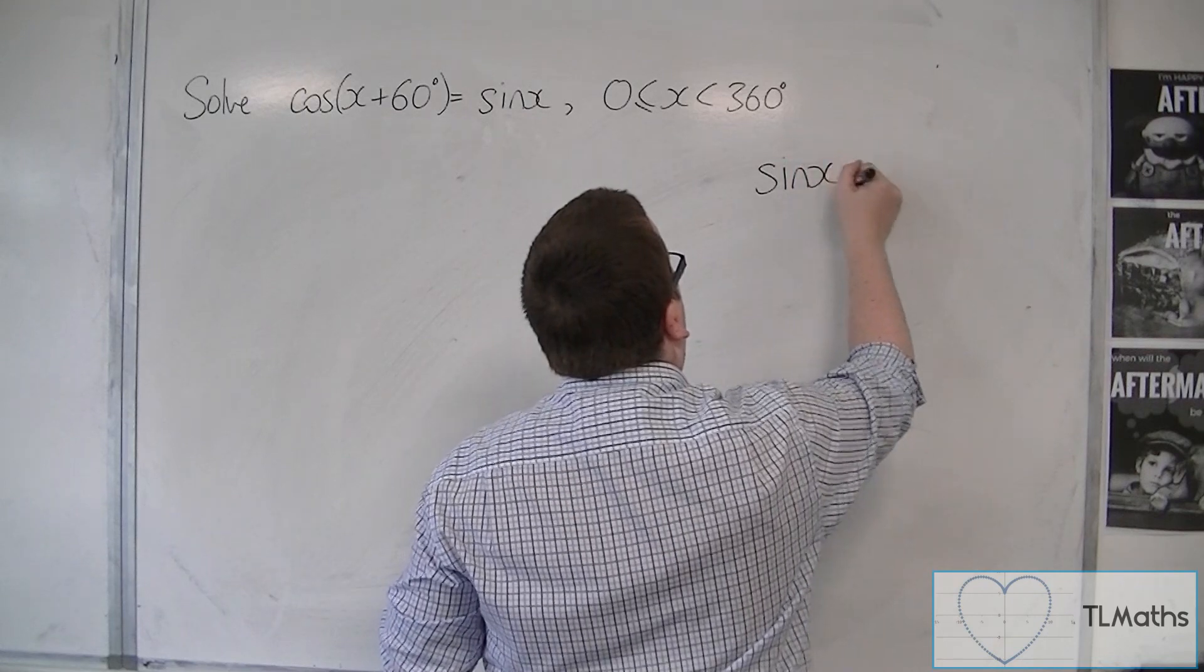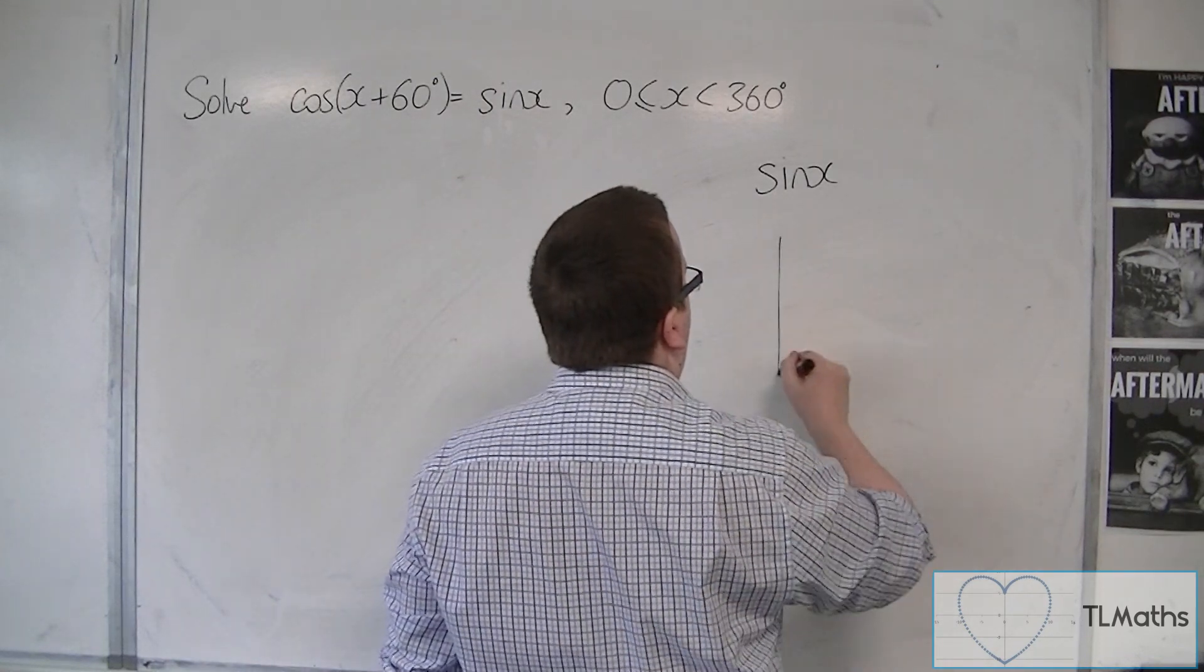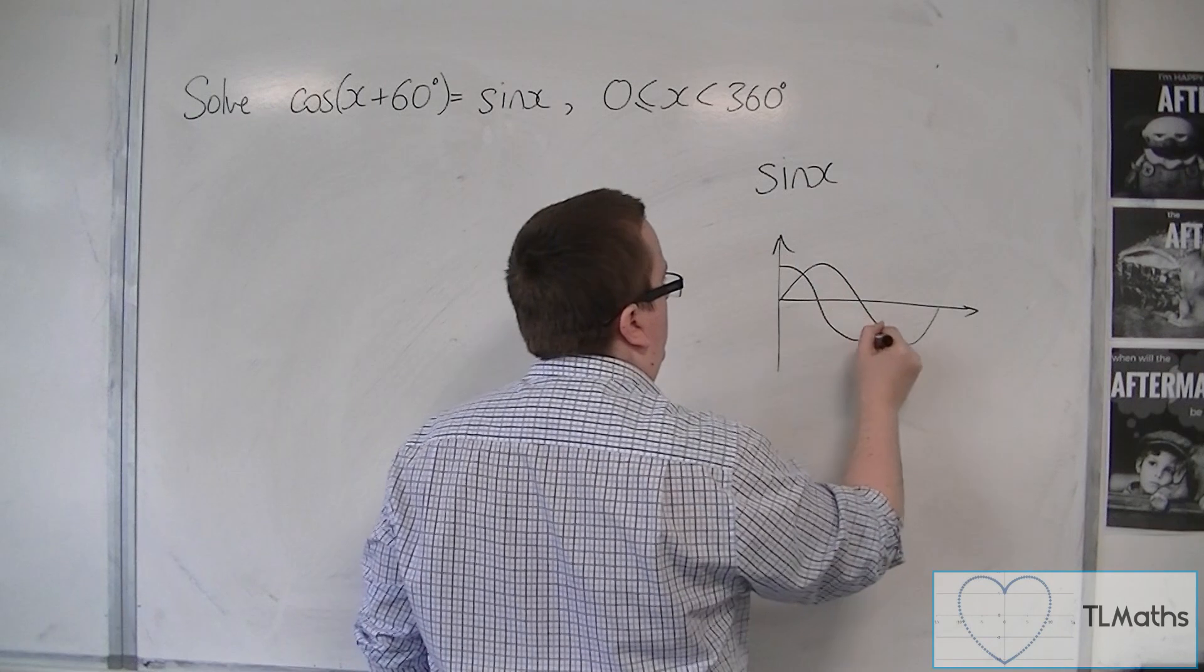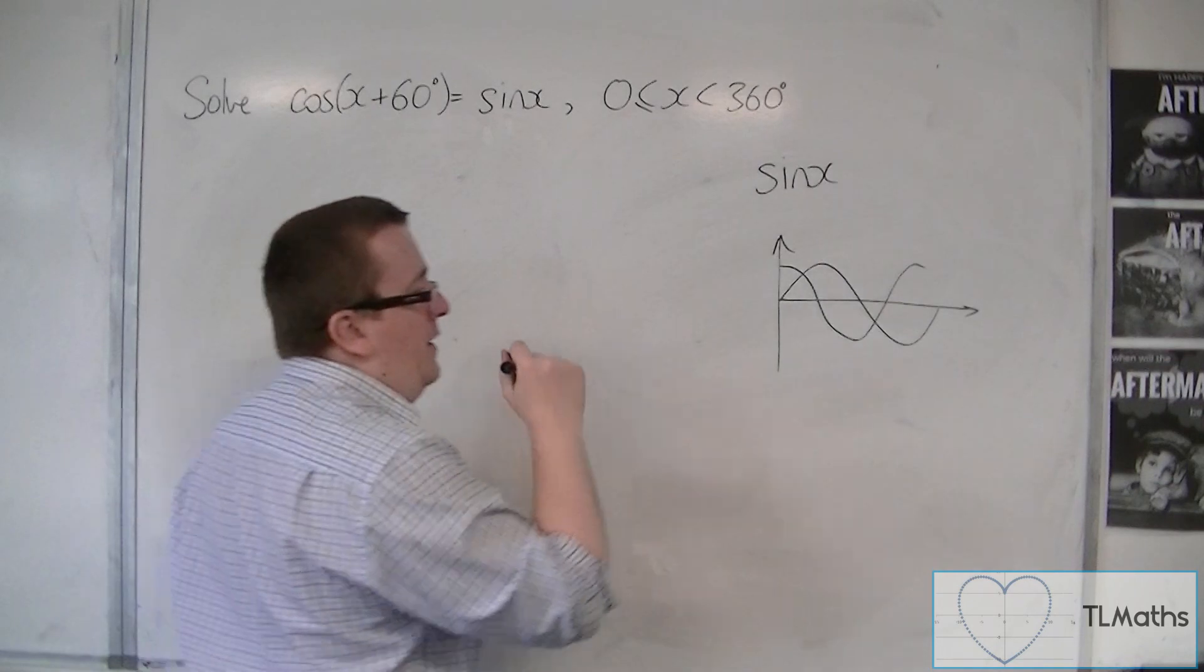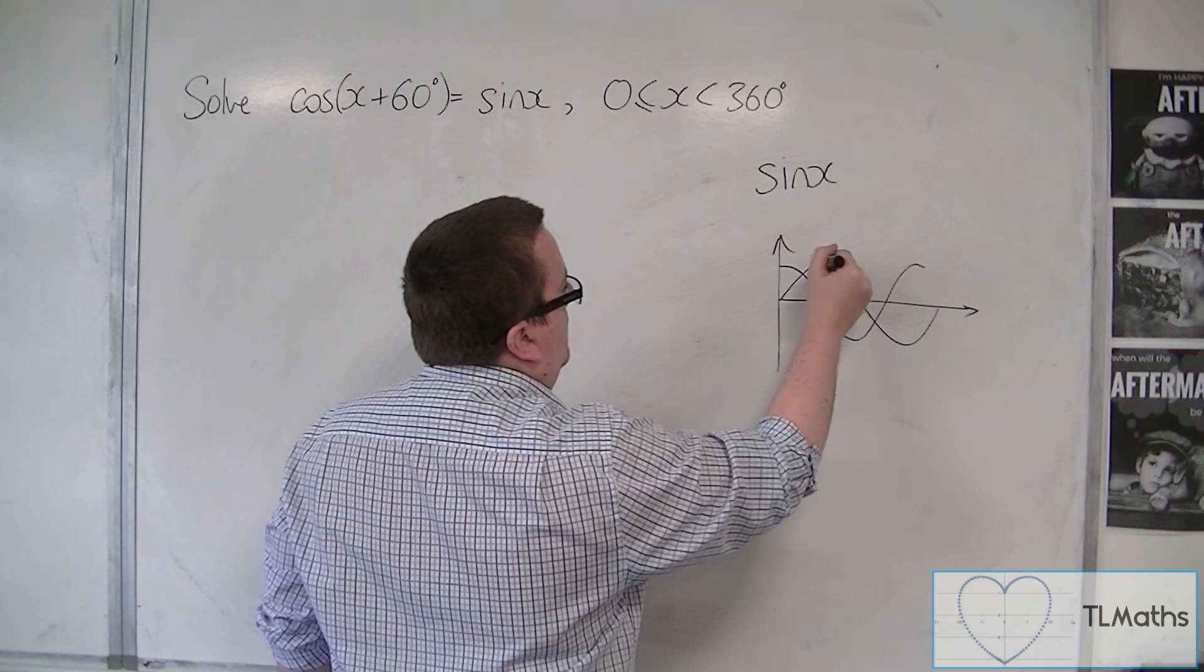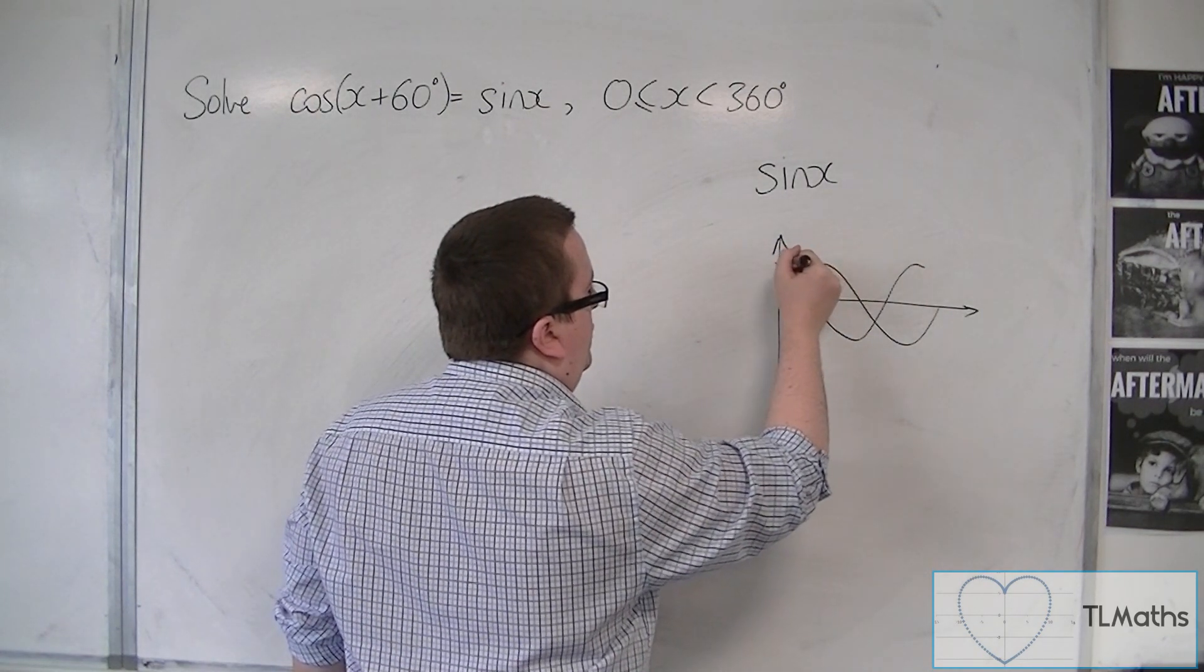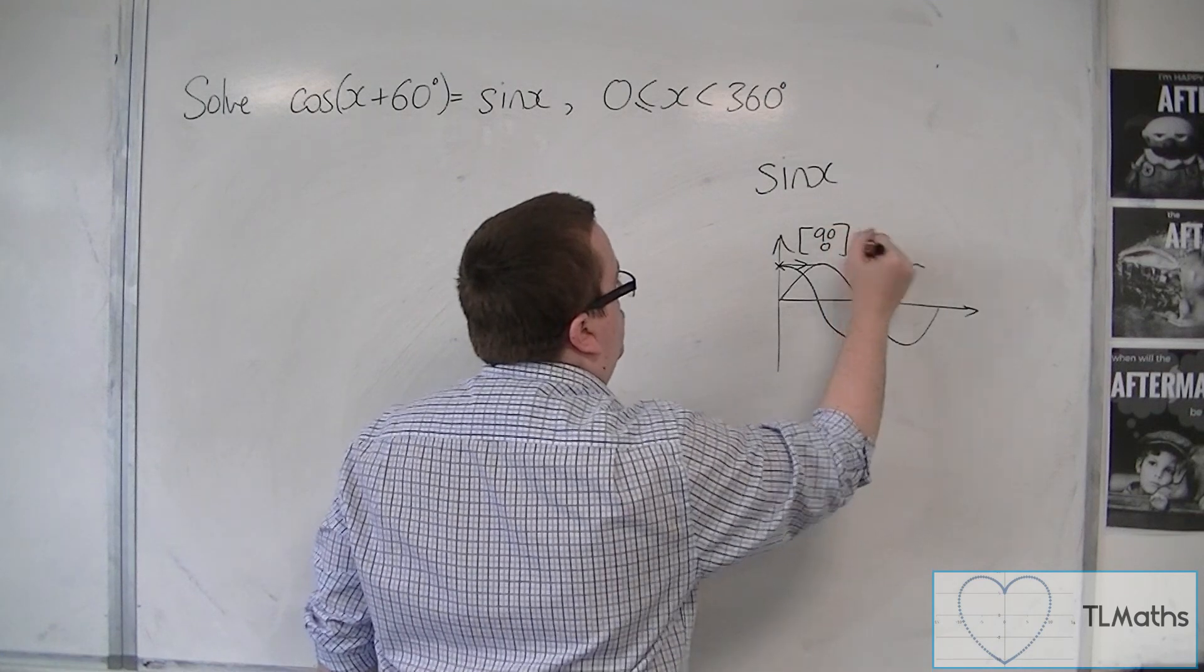Sine x is a translation of cosine. In the previous video, I sketched sine and cosine on top of each other. Cosine of x, to get it onto sine x, to map it on, I must translate by the vector (90, 0). That's what I would have to do, working in degrees.